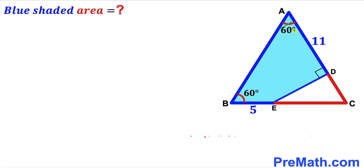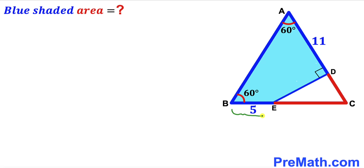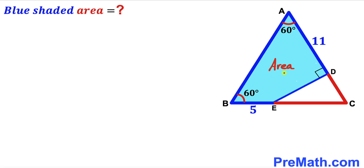Welcome to pre-math. In this video we have a blue shaded quadrilateral ABED fully confined in a big triangle ABC, such that side BE has length 5 units, side AD has length 11 units, angle BAD is 60 degrees, angle ABE is 60 degrees, and furthermore this angle is 90 degrees. Our task is to calculate the area of the blue shaded region.